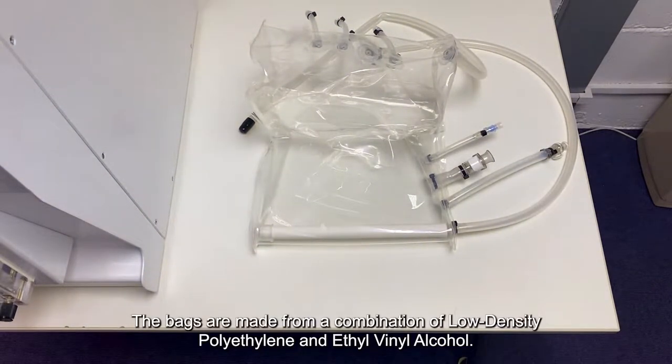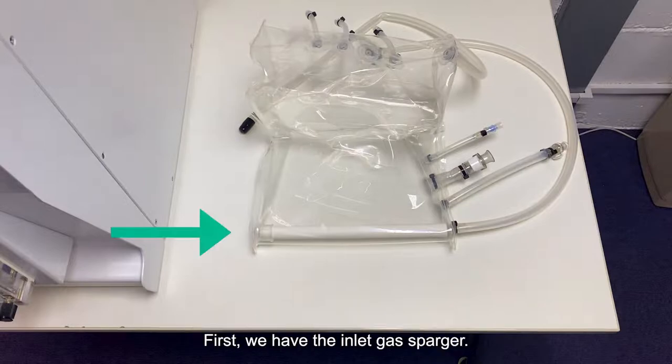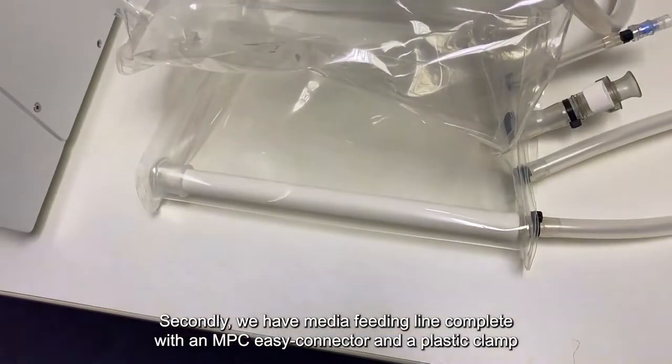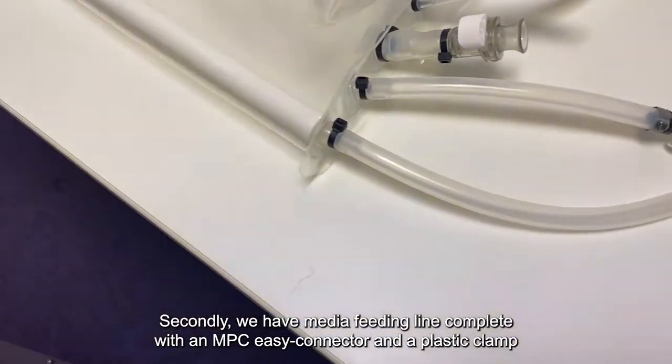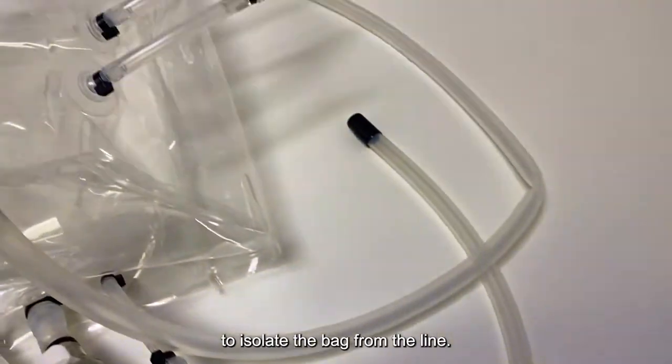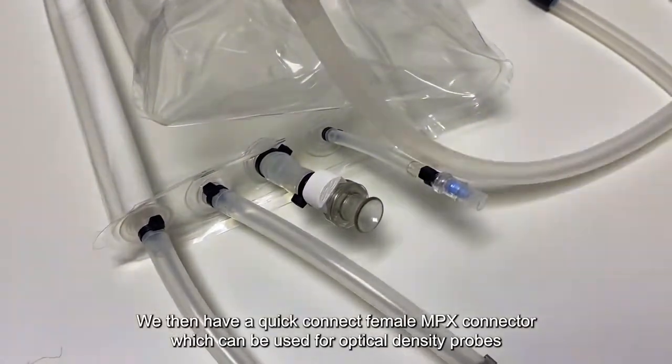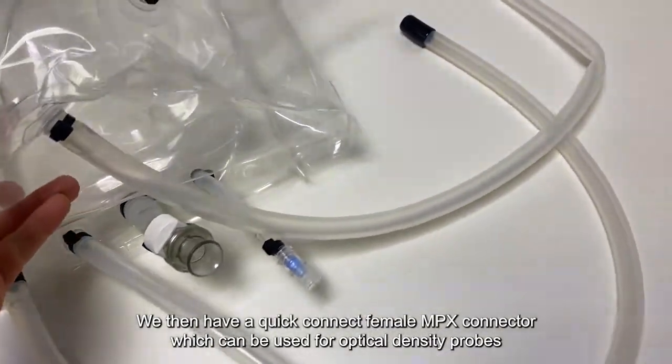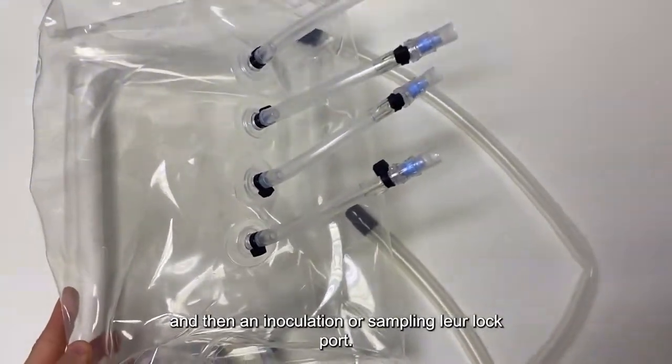The bags are made from a combination of low-density polyethylene and ethyl vinyl alcohol. First, we have the inlet gas sparger, and this is the driving force of the reactor as it provides gas for mixing, but also gas for cell metabolic requirements. Secondly, we have the media feeding line, complete with an MPC EZ connector and a plastic clamp to isolate the bag from the line. And then we have a quick connect female MPX connector, which can be used for optical density probes, and then an inoculation or sampling luer lock port.